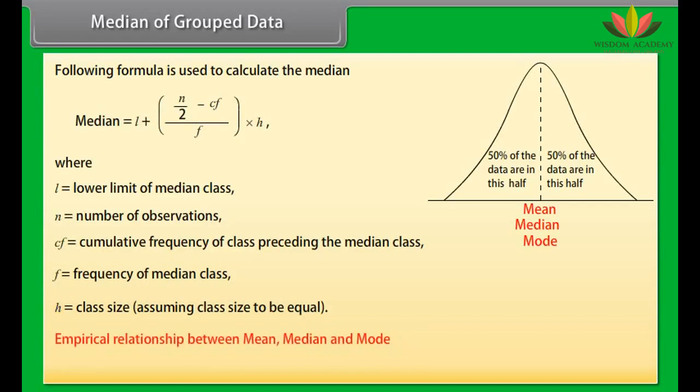Empirical relationship between mean, median and mode: 3 × median equals mode plus 2 × mean.